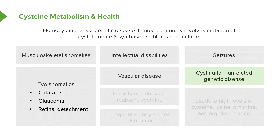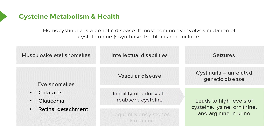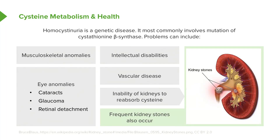Cystinuria is an unrelated genetic disease that has many symptoms that are similar. It involves the inability of the kidneys to reabsorb cysteine. When this happens, we see problems associated with the kidneys, including high levels of cysteine, lysine, ornithine, and arginine appearing in the urine. Because these things accumulate, kidney stones develop as well. This is not a disease that you wish on anyone.